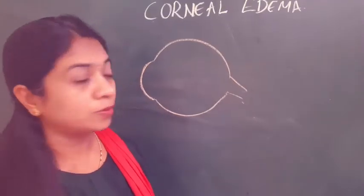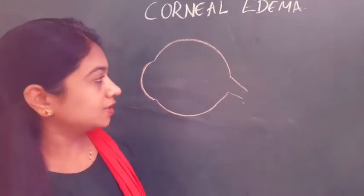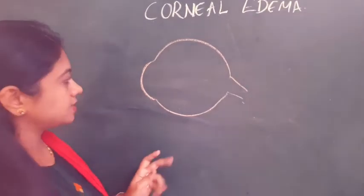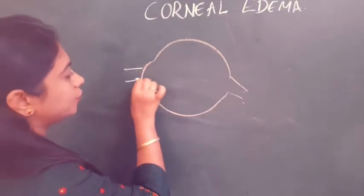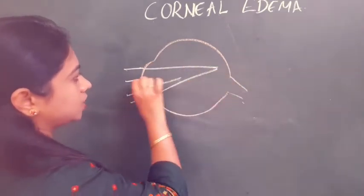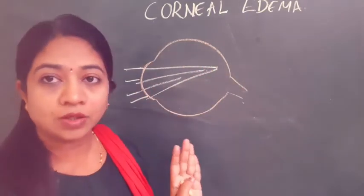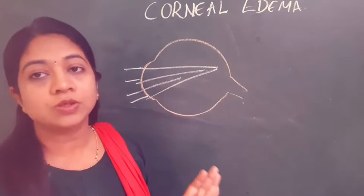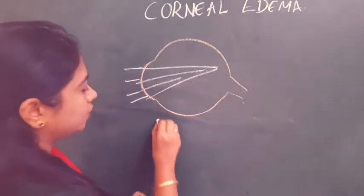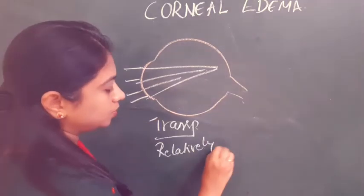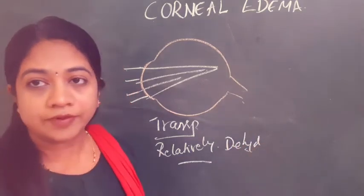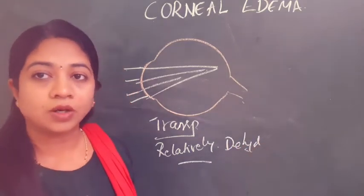So why is this topic of Corneal Edema important? The cornea is one of the main refracting surfaces of the eye which helps in focusing the rays of light. This property of the cornea is because of its transparency, and to maintain the transparency of the cornea, the relative state of dehydration is one of the important factors for corneal transparency.